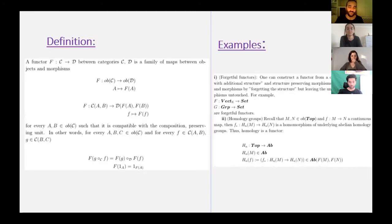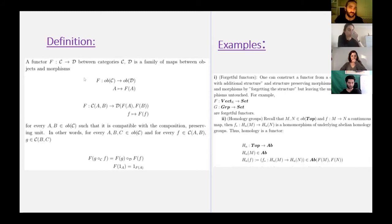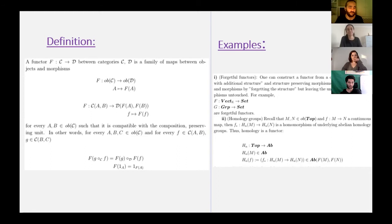Since we defined categories, one natural question is: what are the morphisms between categories? Maps between categories are called functors. A functor F from category C to category D is a family of maps between objects and morphisms. In a category, we have both objects and morphisms, so this functor should map both objects and morphisms. We also require from your functor to be compatible with composition, and it should map identity elements to identity elements.